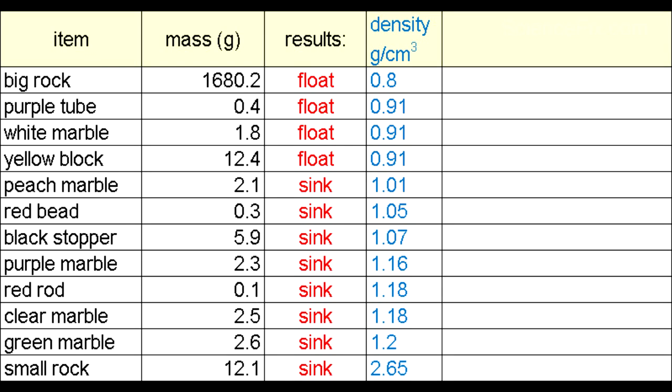And if we think about it, what's the density of water? The density of water is actually 1. So those items that are less dense than water float in water, and those items that have a higher density than water sink in water.